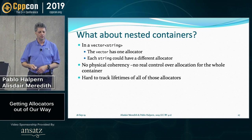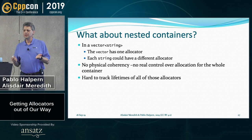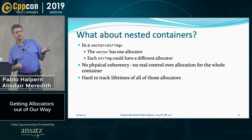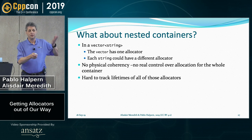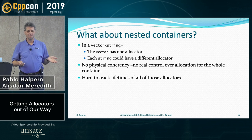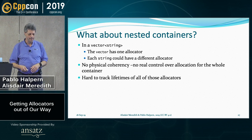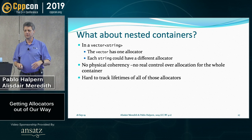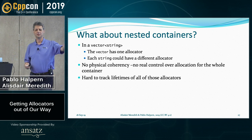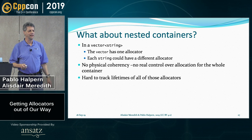So what about nested containers? If you have something like a vector of string, the vector can be created with an allocator, but then every string you insert into it could theoretically have its own different allocator. You don't have the physical coherency of allocating all from specific pages. And there's a lifetime issue — every allocator is managing some resource. If the resource doesn't outlive the vector, you're in trouble. If you've inserted a string that uses a certain resource, and then that resource goes out of scope, you have basically the dangling pointer problem.